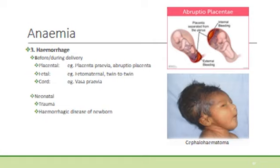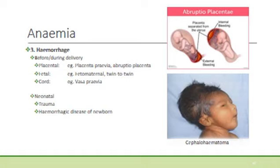Haemorrhage will obviously also result in anaemia. This can happen before or during delivery from placental causes such as placenta praevia or abruptio placentae, giving antepartum haemorrhage. Fetal causes may be foeto-maternal or twin-to-twin transfusion, where one baby will be anaemic and the other polycythaemic. In vasa praevia, the vessels of the cord may rupture, leading to massive blood loss and hypovolaemic shock. Neonatal causes include trauma such as cephalhaematomas or subgaleal bleeds, and haemorrhagic disease of the newborn due to vitamin K deficiency, which can lead to significant gastrointestinal bleeds or, in the worst case, intracranial haemorrhage.